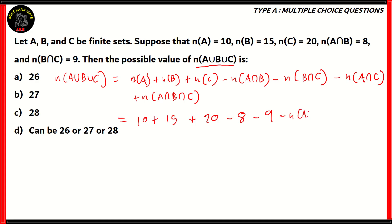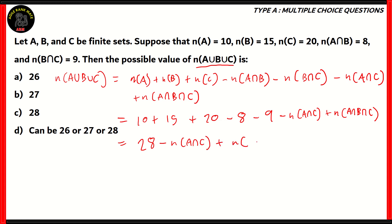We still have N(A∩C) and N(A∩B∩C) whose values are not given. 10 plus 15 is 25, 25 plus 20 is 45, 45 minus 17 is 28. So it will be 28 minus N(A∩C) plus N(A∩B∩C).